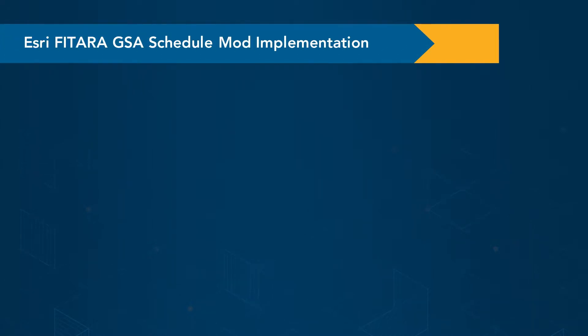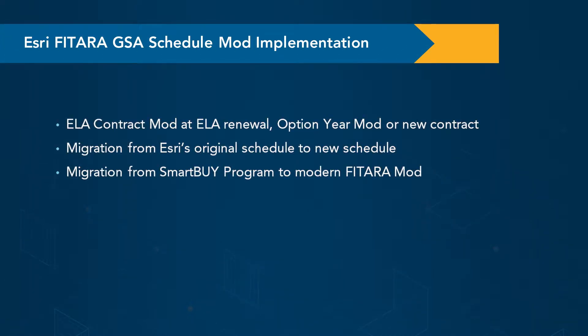As far as implementation of these initiatives, the ELA discounts will be accomplished through modification of existing ELA contracts — either at the time of renewal, if renewal is imminent, or at the time of option year mod, which is most likely the case and occurs on an annual basis, or of course at the point of new contract.